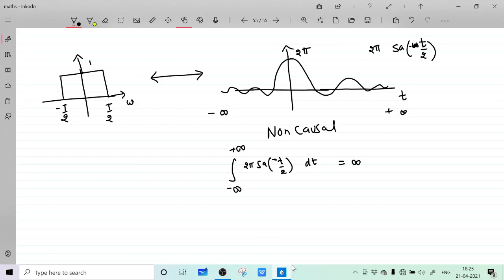So with this we are concluding our statement that any ideal filter, any ideal low-pass filter, is non-causal and unstable. This is our conclusion.